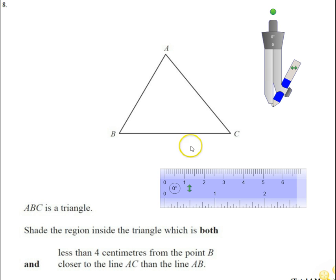Hi, in this question we have ABC which is a triangle and we're being asked to shade the region inside the triangle which is both less than four centimeters from the point B and closer to the line AC than the line AB. So it needs to be closer to this line than it is to this line.